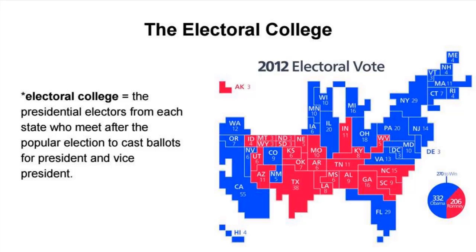The Electoral College makes some states worth more than others. Sparsely populated western states like Montana, North Dakota, Wyoming, and South Dakota are only worth three electoral votes because they have one member of the House of Representatives — their entire state is one congressional district — plus their two senators. Whereas New York, for example, is worth 29 electoral votes because there are 27 congressional districts and 27 House members, plus two senators.